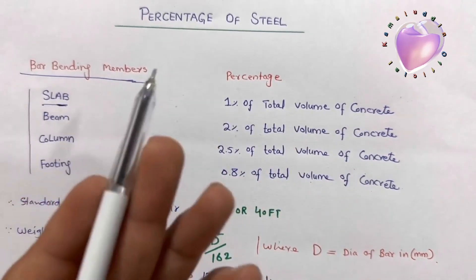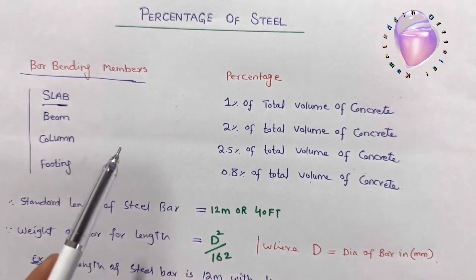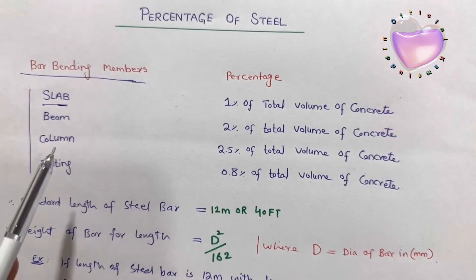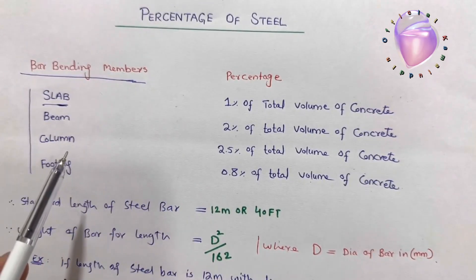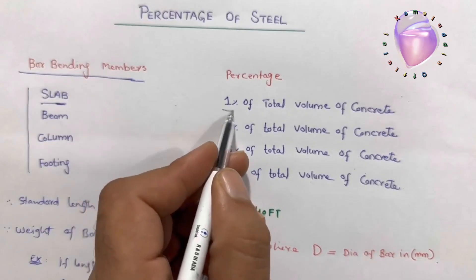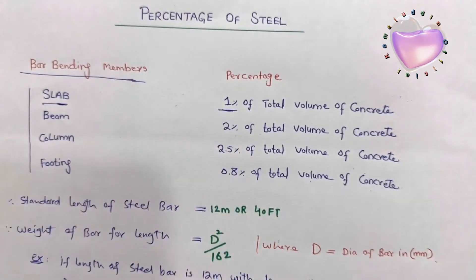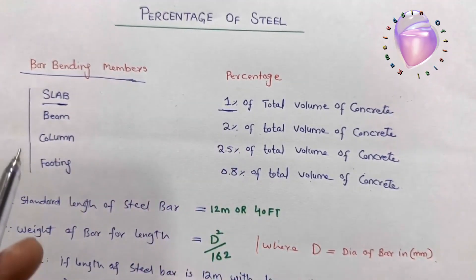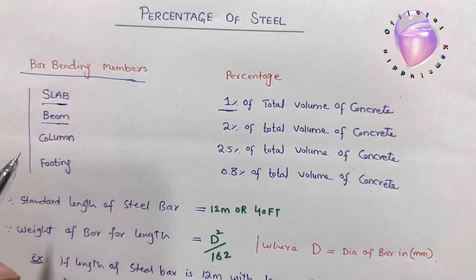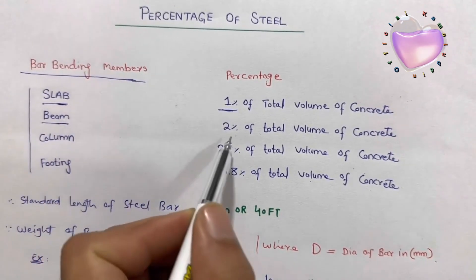For slab construction, we use one percent of the total volume of concrete. The volume of concrete is: length of the slab × width of the slab × thickness of the slab. From that total volume, we use one percent as the steel volume.